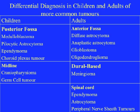This table shows the differential diagnosis in children and adults of the more common tumours, and you can see that they're quite different. In children, the majority of tumours occur in the posterior fossa, so we see medulloblastomas, pyelocytic astrocytomas, ependymomas, and choroid plexus tumours.